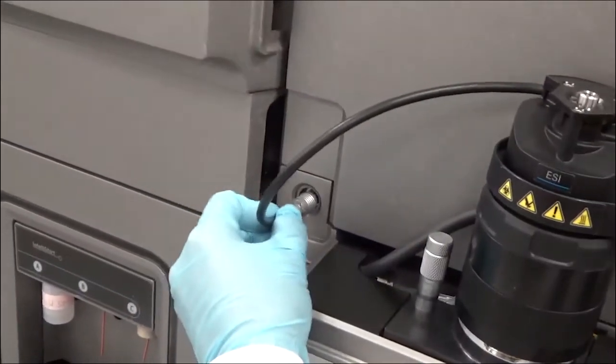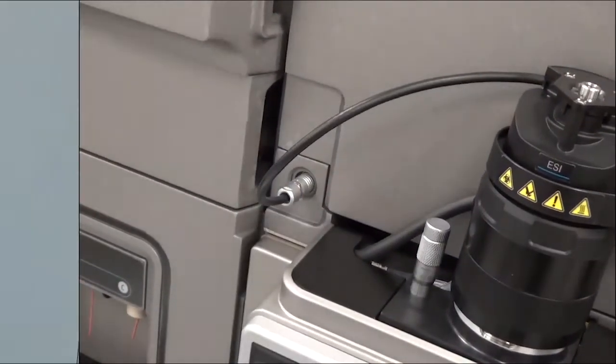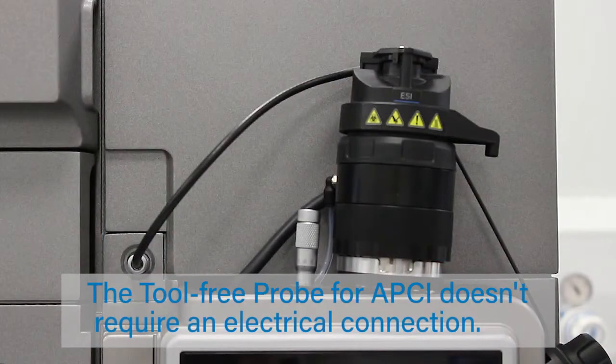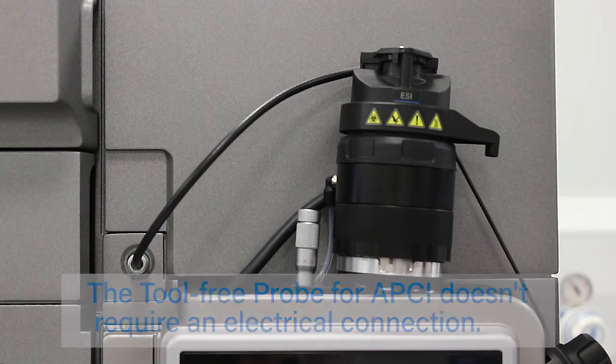Connect the probe adapter's cable to the high voltage connector. The capillary is housed in a protective outer PEEK tubing sleeve, referred to as the probe assembly. Note that the tool-free APCI probe does not require an electrical connection.